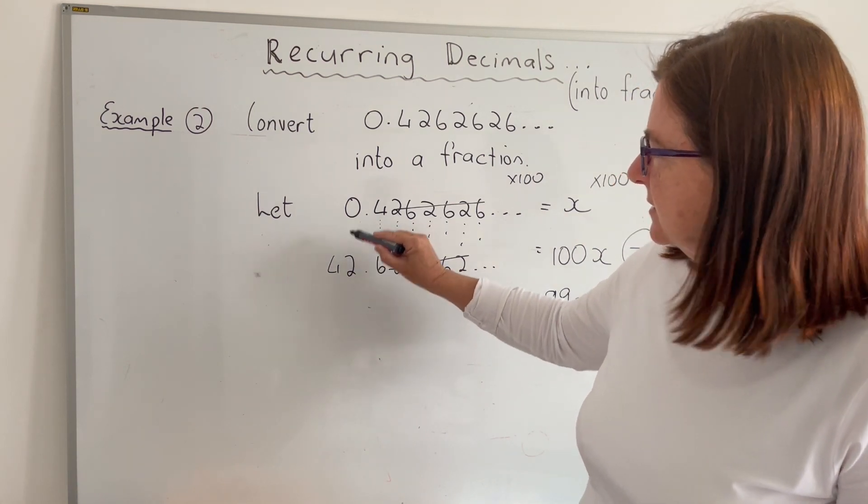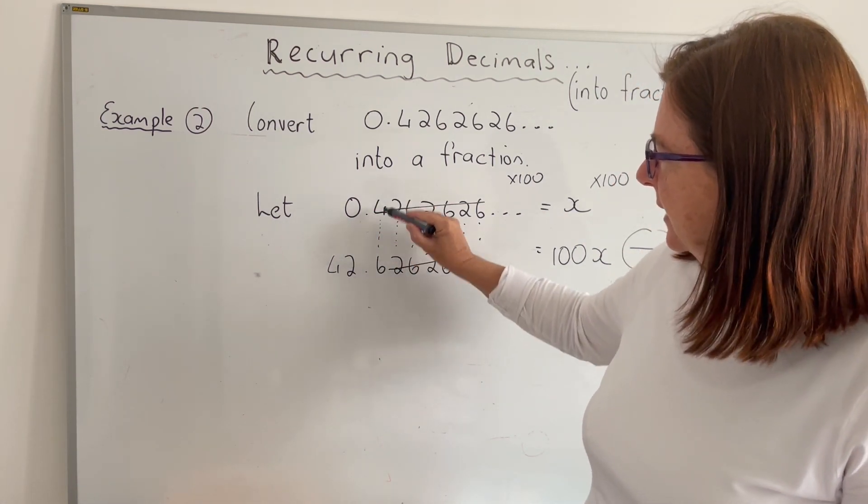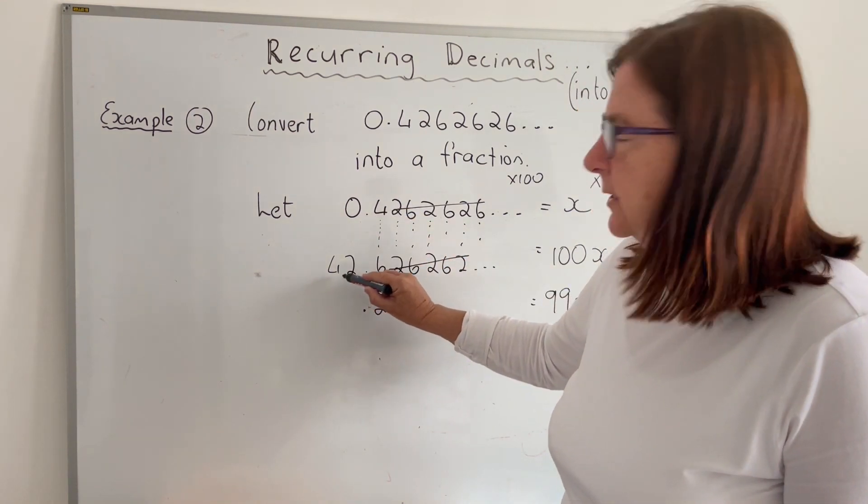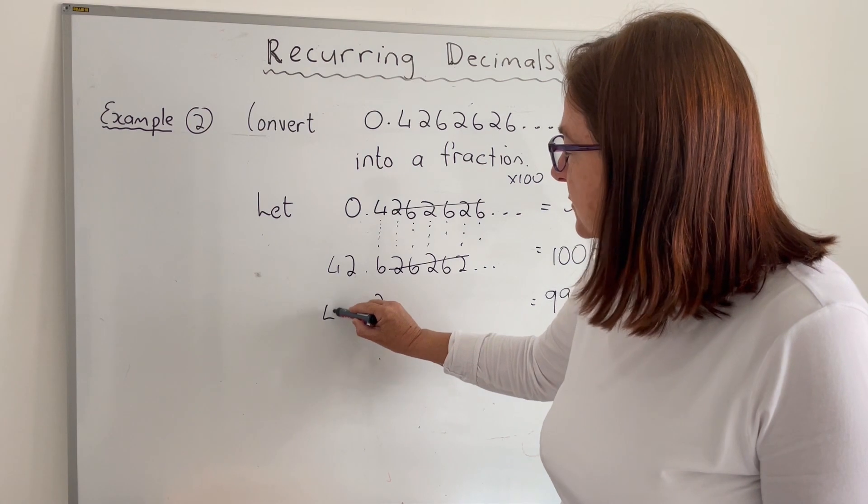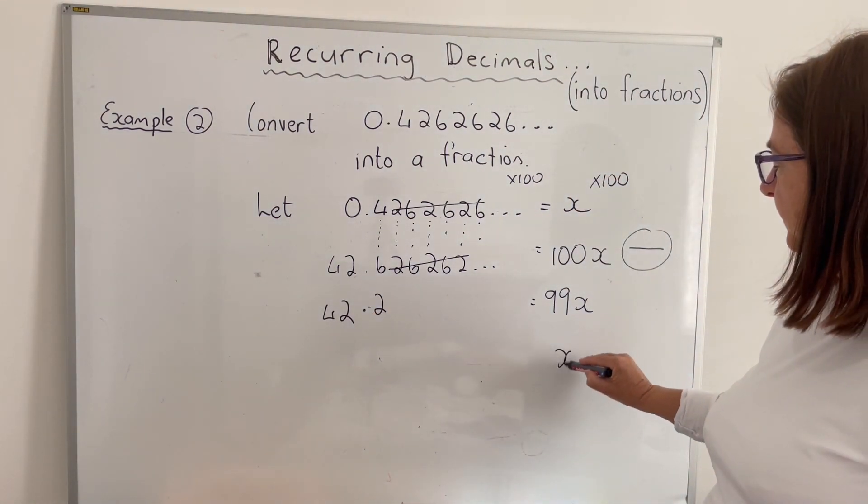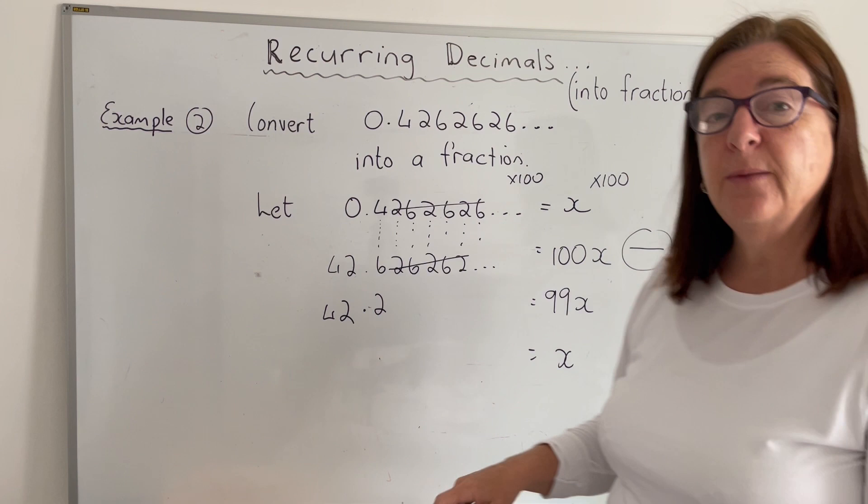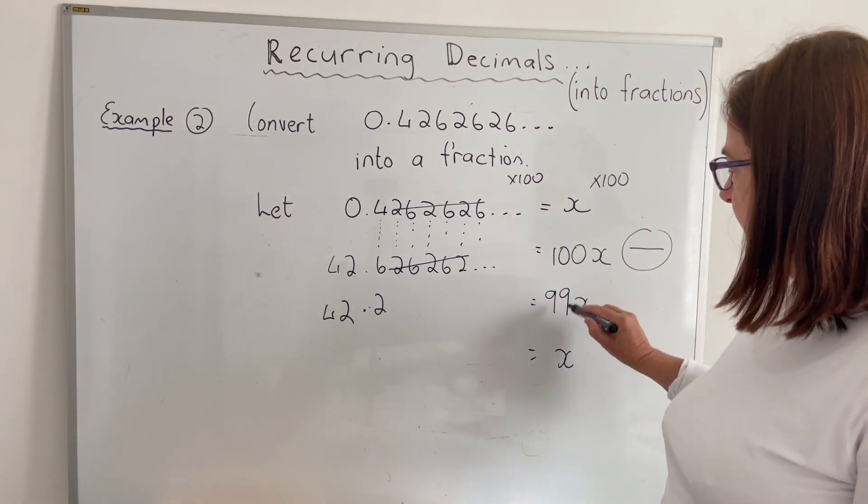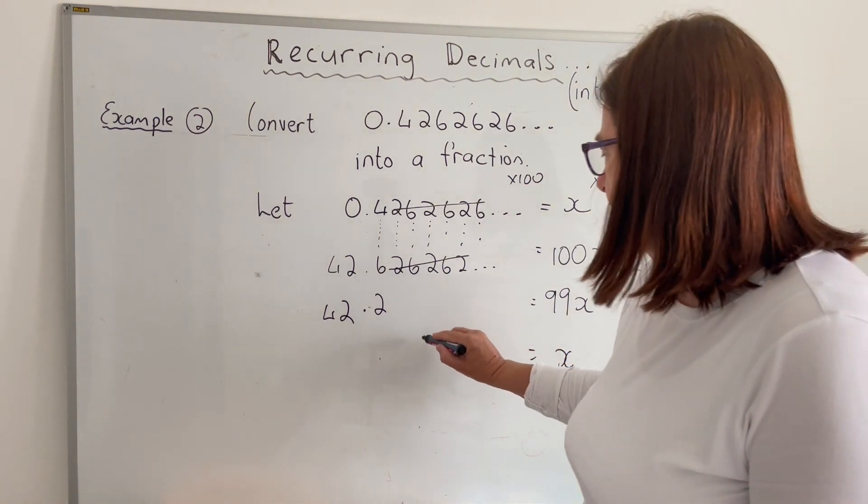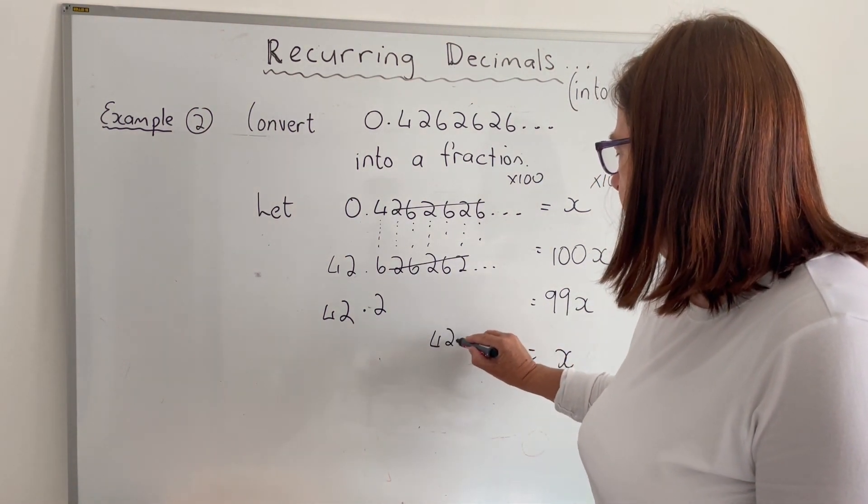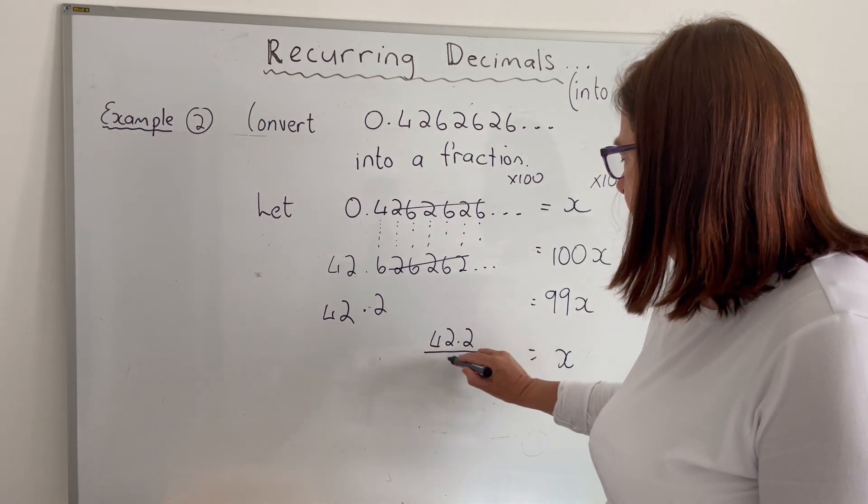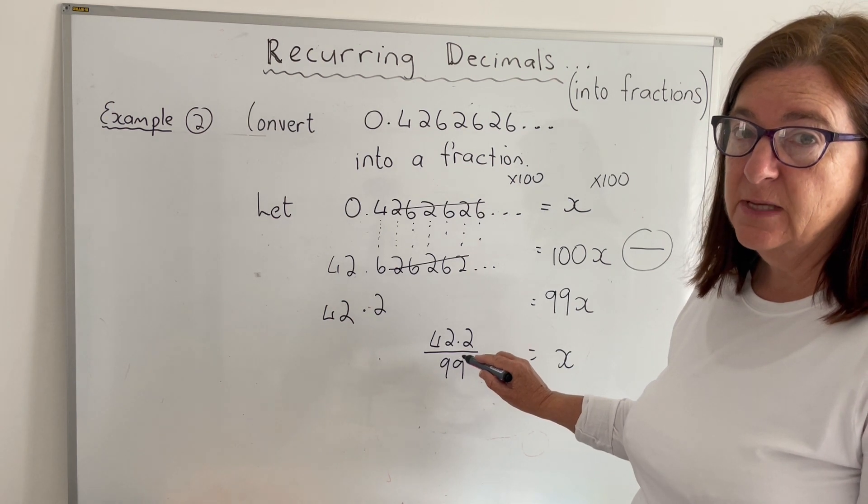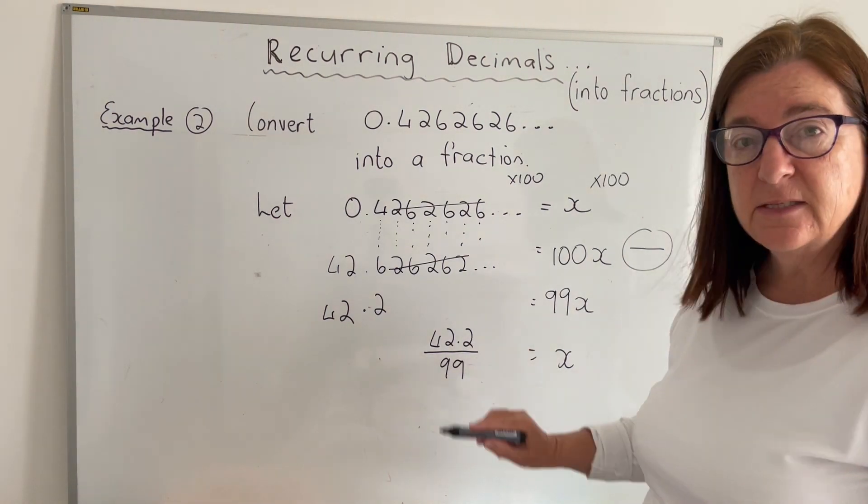So now I'm solving for x. The rule is that we divide both sides by 99. So that divided by 99 it's gone, it's just 1. And then this will be 42.2 divided by 99. That's not in simplest form. In math, decimals need to be eliminated.